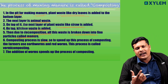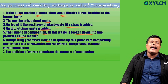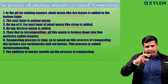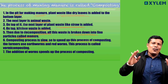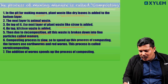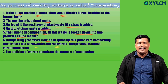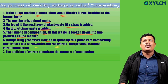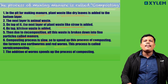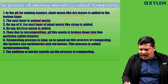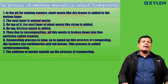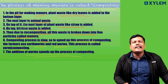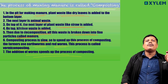The composting process is generally slow. In order to speed up this slow process, we need to add earthworms and redworms to this compost pit. When this is done, the composting process is called vermicomposting. The addition of worms speeds up and accelerates the process of composting.